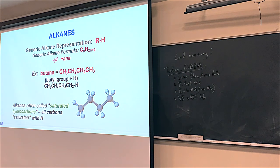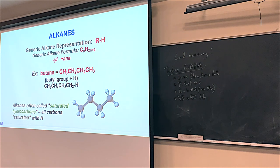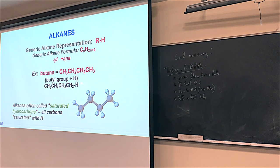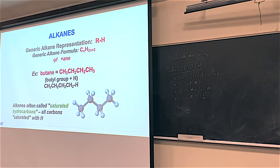Butane comes from a butyl group. A butyl group is just a series of sp3 hybridized, i.e., tetrahedral carbons. Every spot in the butyl group is taken up by hydrogen except for one at the very end, where you can connect things. Taking a butyl group and putting a hydrogen on the end turns it into butane. The generic formula for alkanes is always CnH2n+2.